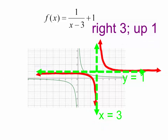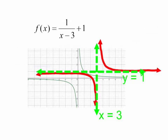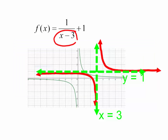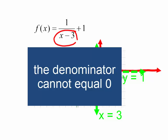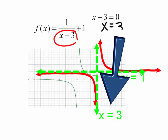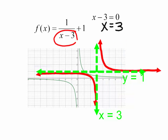Let's talk about finding vertical asymptotes. If asked what is the vertical asymptote of this function, remember the vertical asymptote is where the function is undefined — we cannot have 0 in the denominator. So when does x minus 3 equal 0? We add 3 to both sides, and the vertical asymptote is x equals 3.